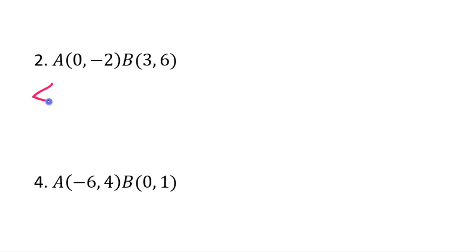Looking at number 2. Component form, 3 minus 0 is 3. 6 minus negative 2 or 6 plus 2 is 8. So, that's my component form. In unit vector form, this would be 3i plus 8j. Easy peasy, lemon squeezy.